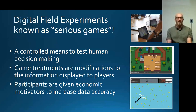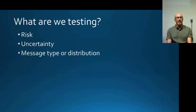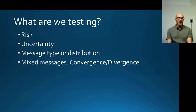We actually pay the people playing our games — the better you play, the more money you make. These performance-based incentives are meant to really improve the data we're getting. We're testing components of risk, how uncertainty plays in, what kind of message we're using, the distribution of that message, and whether messages are consistent or mixed — saying different things — and how that affects decision-making.